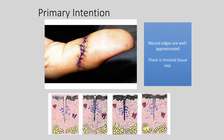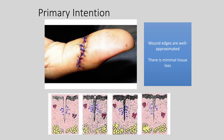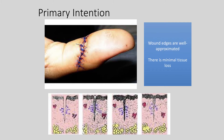Wounds heal by primary, secondary, or tertiary intention. Primary intention applies to surgical wounds and lacerations that can be closed easily with sutures, stitches, or surgical tape. What's important about primary intention is that the wound edges must be well approximated — clean edges easily brought back together. There's usually minimal tissue loss, typically in the dermal layer. These wounds can still become infected, so patients may need prophylactic antibiotics. Sutured wounds can also impair mobility if they are large.